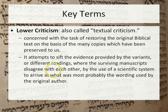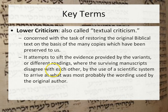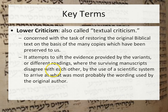Lower criticism, also called textual criticism — though I almost never hear it called lower criticism except in a class explaining these terms — is concerned with the task of restoring the original biblical text on the basis of the many copies preserved for us. In the New Testament we have over 5,000 manuscript fragments. When it comes to the Old Testament, our data bank is not as extensive, but with the discovery of the Qumran manuscripts we have enlarged our basis for analyzing what was the original text. Textual criticism attempts to sift the evidence provided by the variants or different readings.